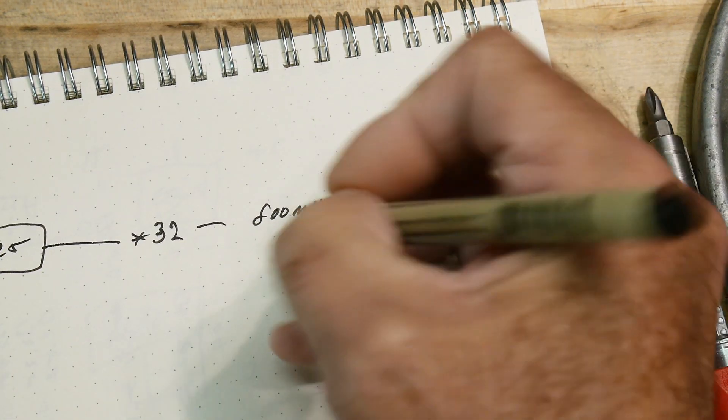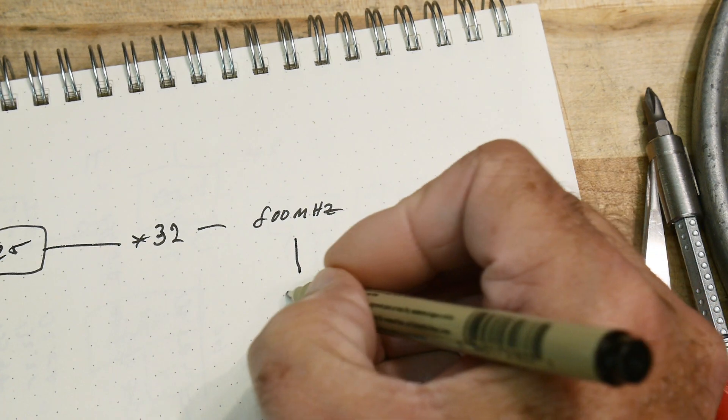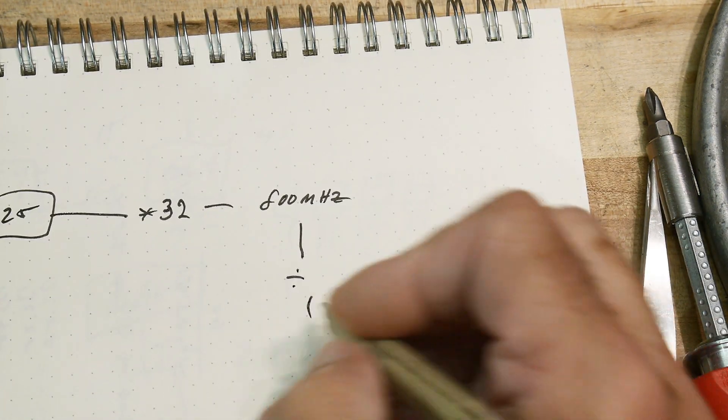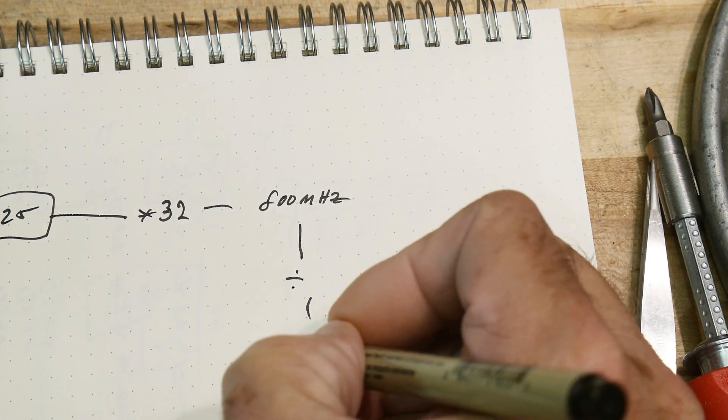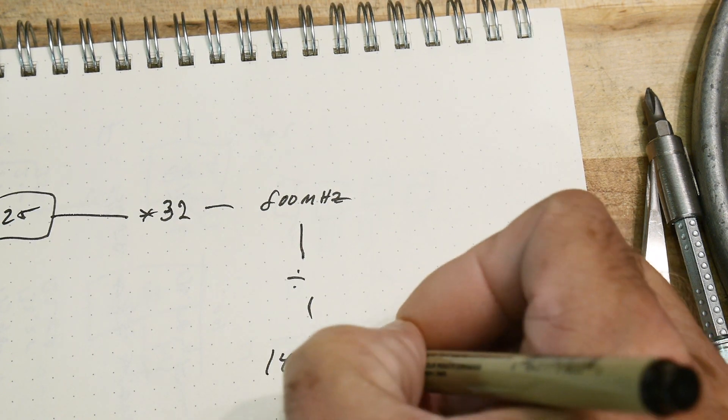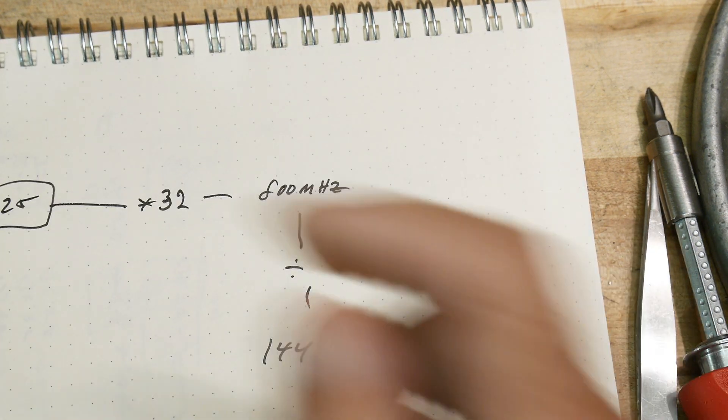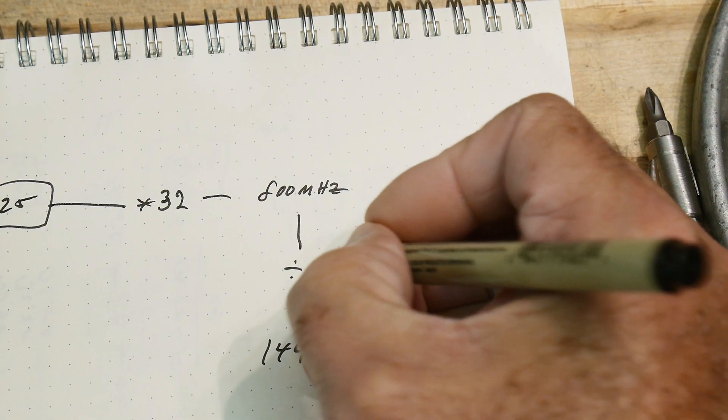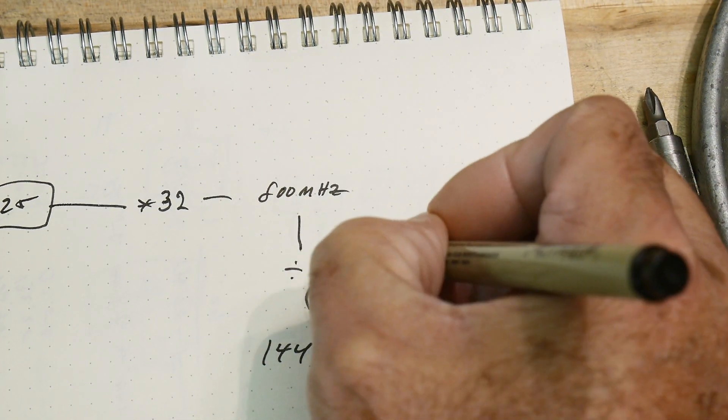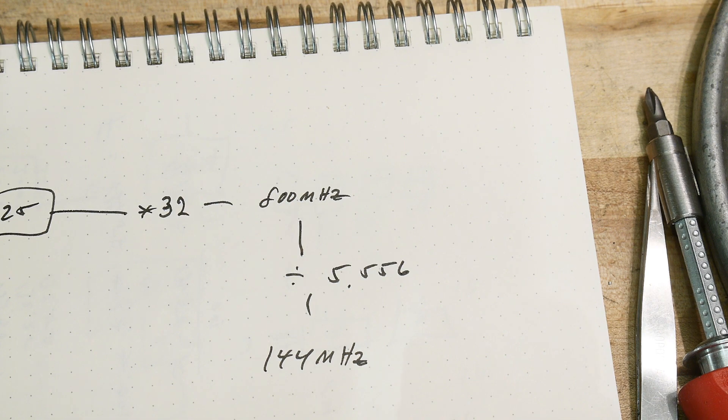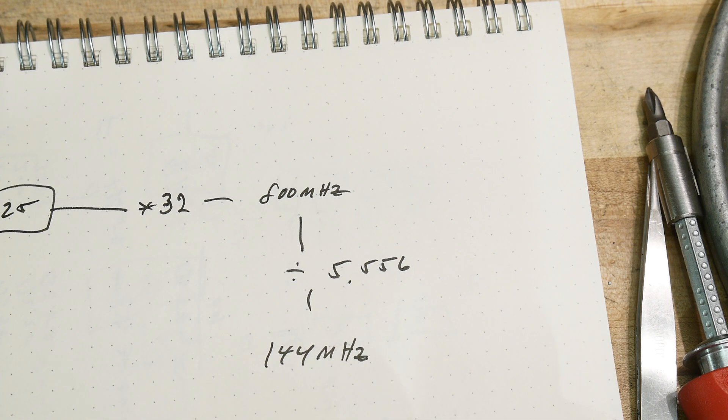And then we're going to have to divide that down, okay? We're going to have to do some division, and we're going to get 144 megahertz, okay? So what do we have to divide it by? We have to divide it by 5.556, okay? Something like that.